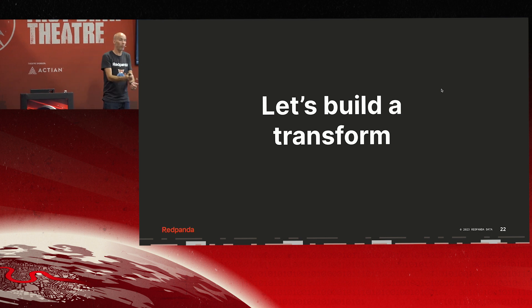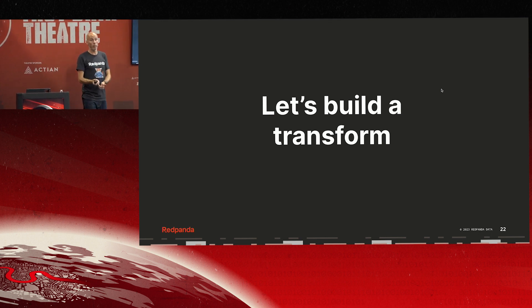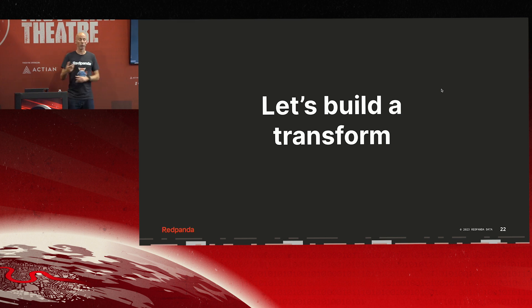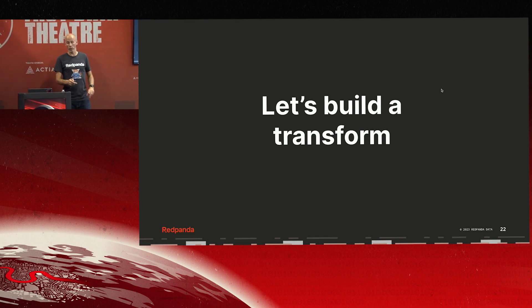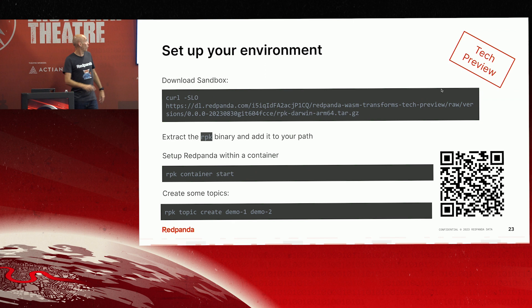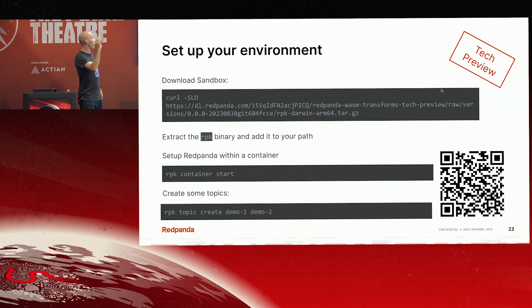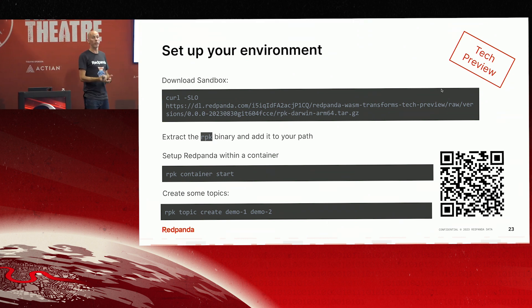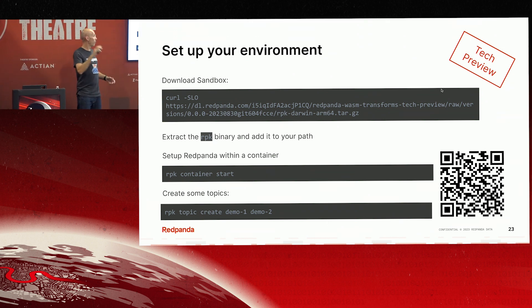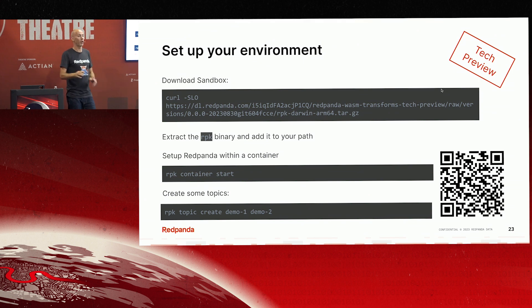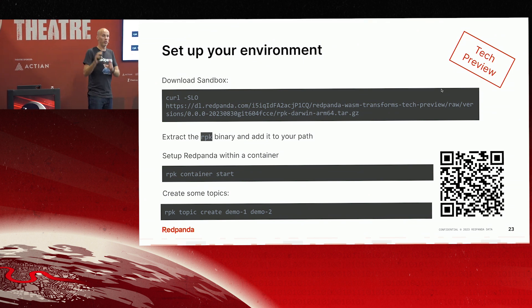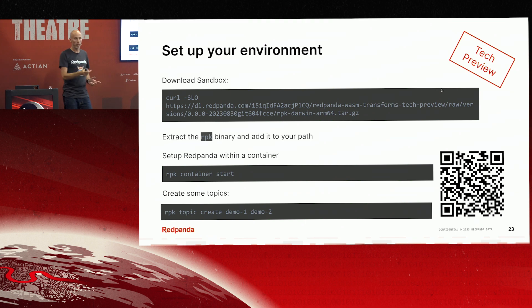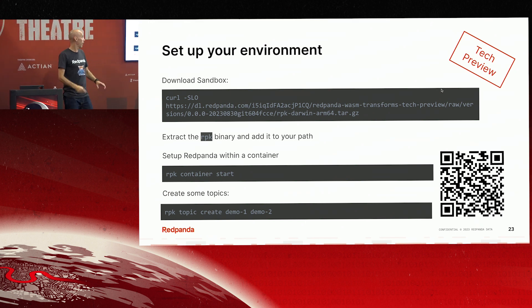I'm going to work through a quick example of how we'd build a transform, and this is super simple — Red Panda is designed to be simple and easy to use. I should point out that all of this is in tech preview right now. We'll be moving into beta later in the year and hopefully to GA shortly after that, so please don't run this in production today. If you want to, come and chat with me at the stand afterwards. This QR code takes you straight to our docs.